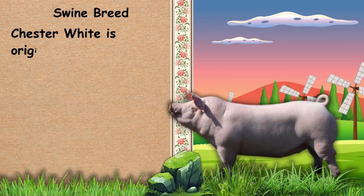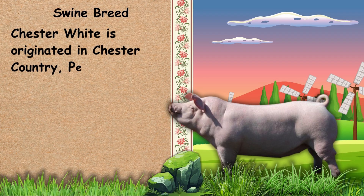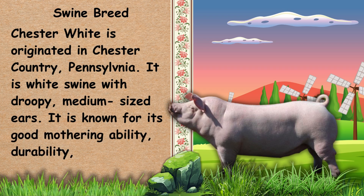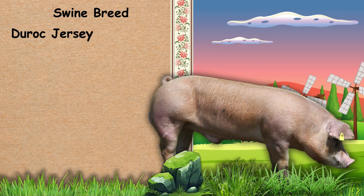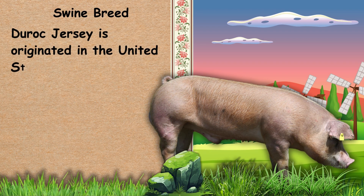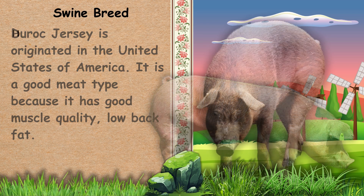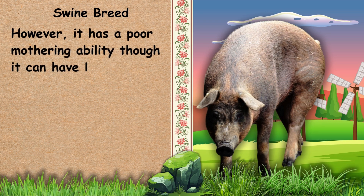Next, we have Chester White. Chester White originated in Chester County, Pennsylvania. It is a white swine with droopy, medium-sized ears. It is known for its good mothering ability, durability, and soundness. Next, we have Duroc Jersey. Duroc Jersey originated in the United States of America. It is a good meat type because it has good muscle quality and low back fat. However, it has poor mothering ability though it can have litters ranging from 9 to 10.